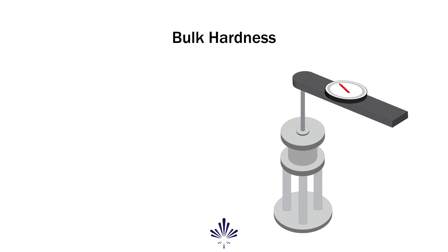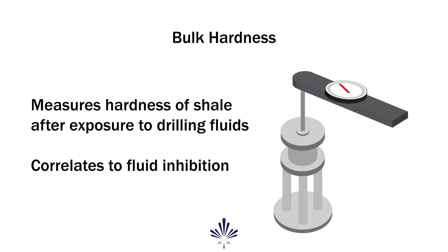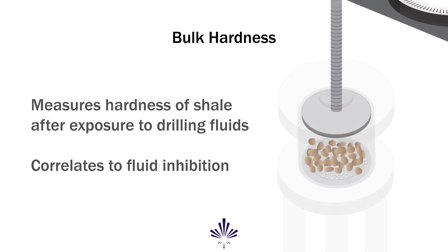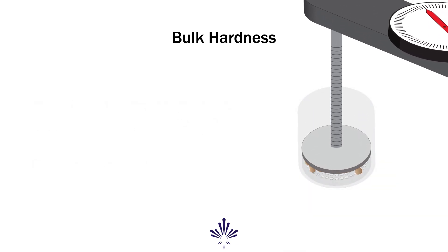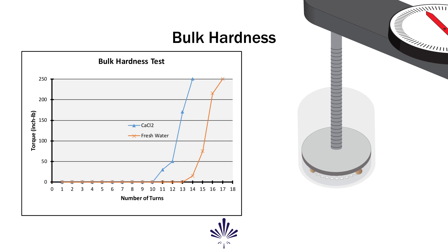Bulk hardness is designed to evaluate the hardness of a shale sample after being exposed to a drilling fluid. The hardness of a shale sample can be correlated to the level of shale inhibition provided by a drilling fluid. In this test, a shale sample is placed in the test solution and hot rolled at 150 degrees Fahrenheit for 16 hours. The shale sample is recovered with a 50 mesh sieve and extruded through a perforated plate using a torque wrench. The profile of torque readings required to extrude the sample relate to the intrinsic hardness of the shale.